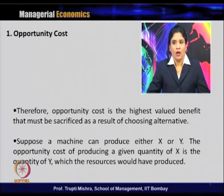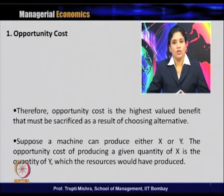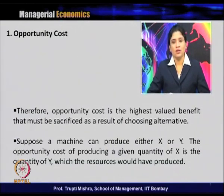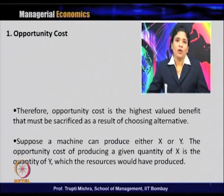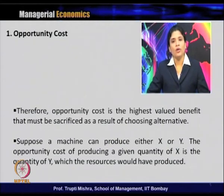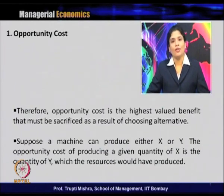For example, suppose a machine can produce either X or Y. With the available resources, they can produce either X or Y. The opportunity cost of producing a given quantity of X is the quantity of Y which those resources would have produced. When evaluating the opportunity cost associated with X, it is always in terms of Y, and the opportunity cost of Y is always in terms of X.